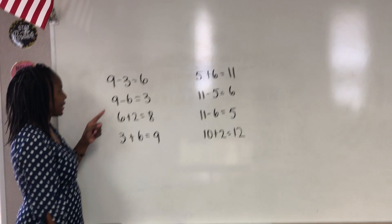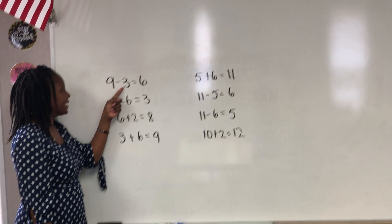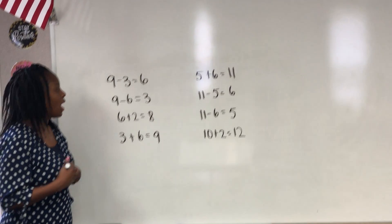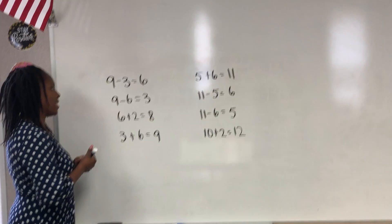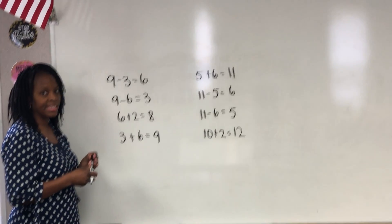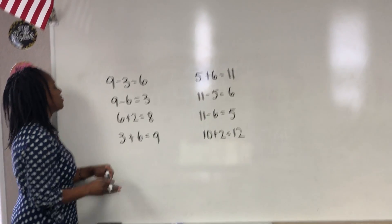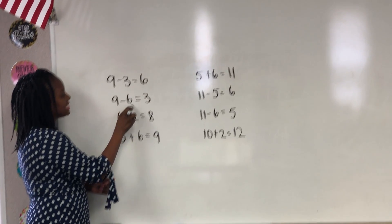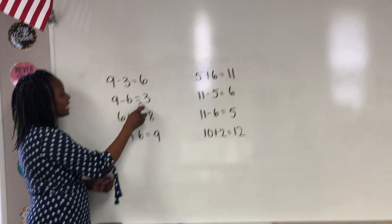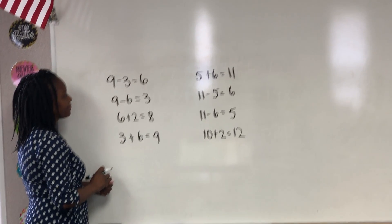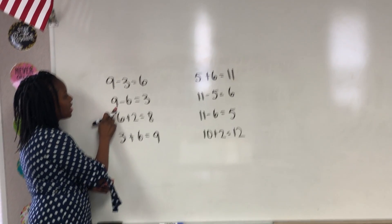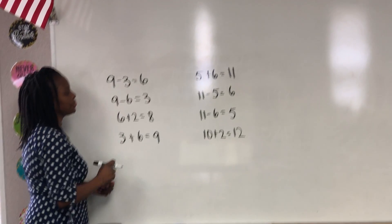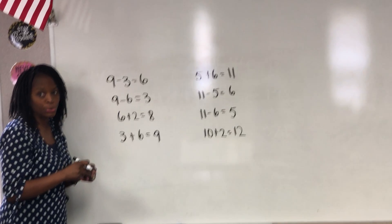Take a look at this right here. You have 9 minus 3 equals 6. The digits in this problem are 9, 3, and 6. Now here's the subtraction twin: 9 minus 6 equals 3. It has the number 9, the number 6, and the 3. So those two go together.